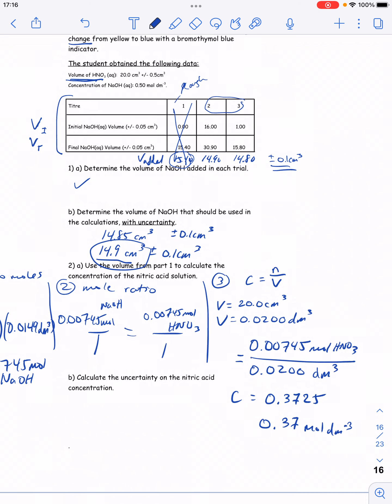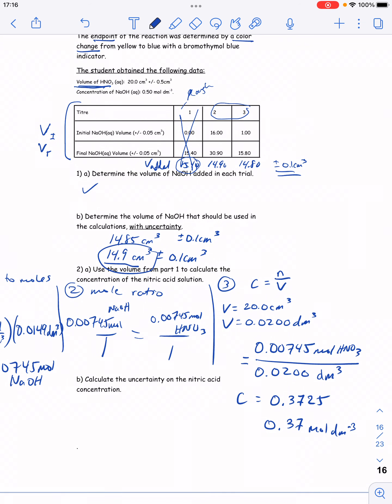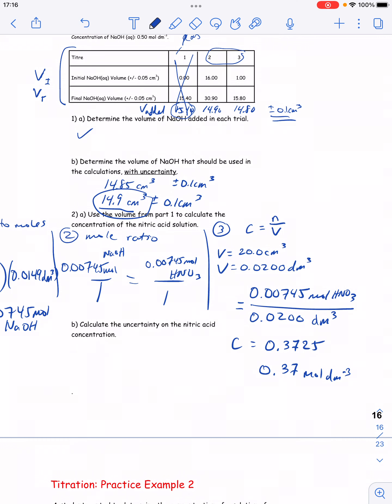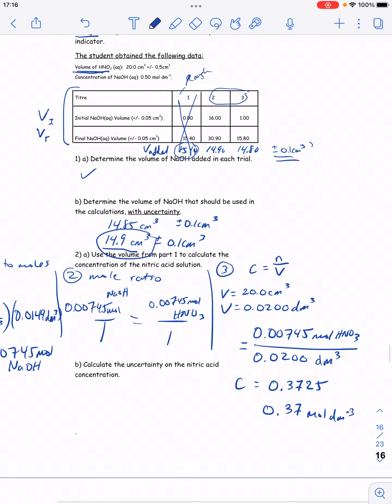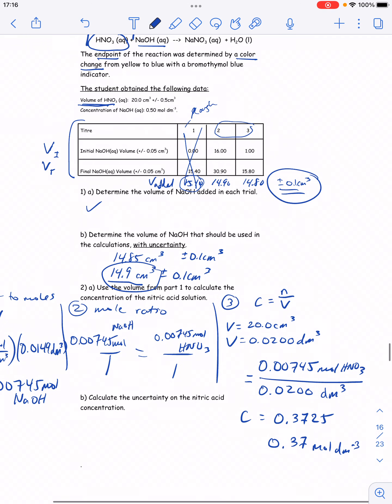Now, if I'm going to do the uncertainty, I would need to take each uncertainty, convert it to percents, and add them up. I've got uncertainty on the volume of the NaOH, and I've got uncertainty on the volume of the nitric acid. I don't have any uncertainty on the concentration of the NaOH, so I'm going to assume that that's negligible.